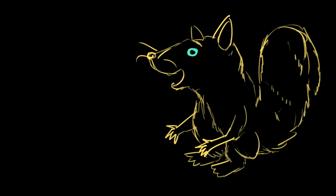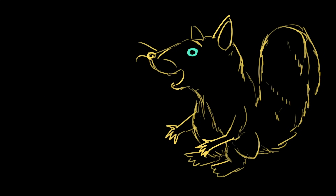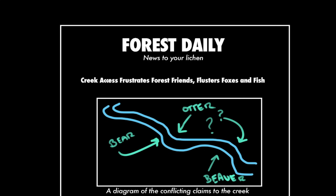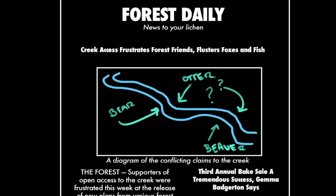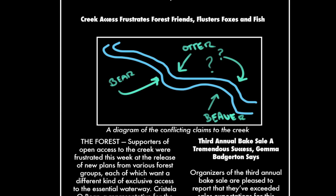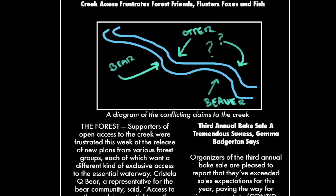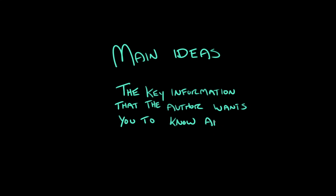I'm working on a school assignment. Squirrels have school? Yeah. So, I've got this newspaper article, and Mr. Badgerton says I have to draw out what the main idea is. How is that different from a summary? A summary is all the key details of an article or a story, but a main idea is bigger than details. It's what those details add up to. A main idea is the key information that the author wants you to know after you've finished reading the text.